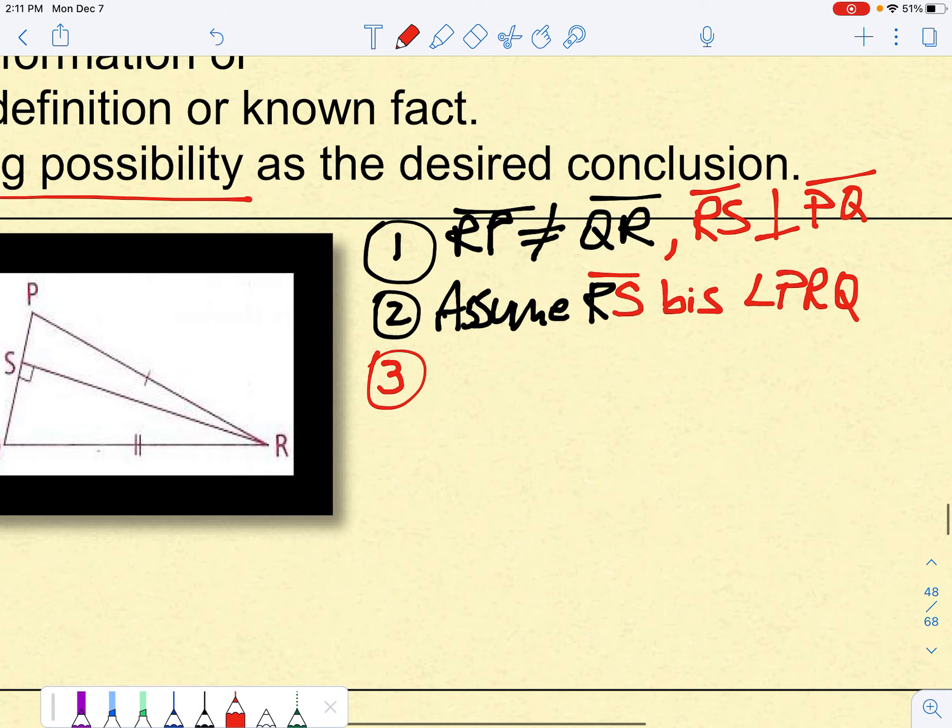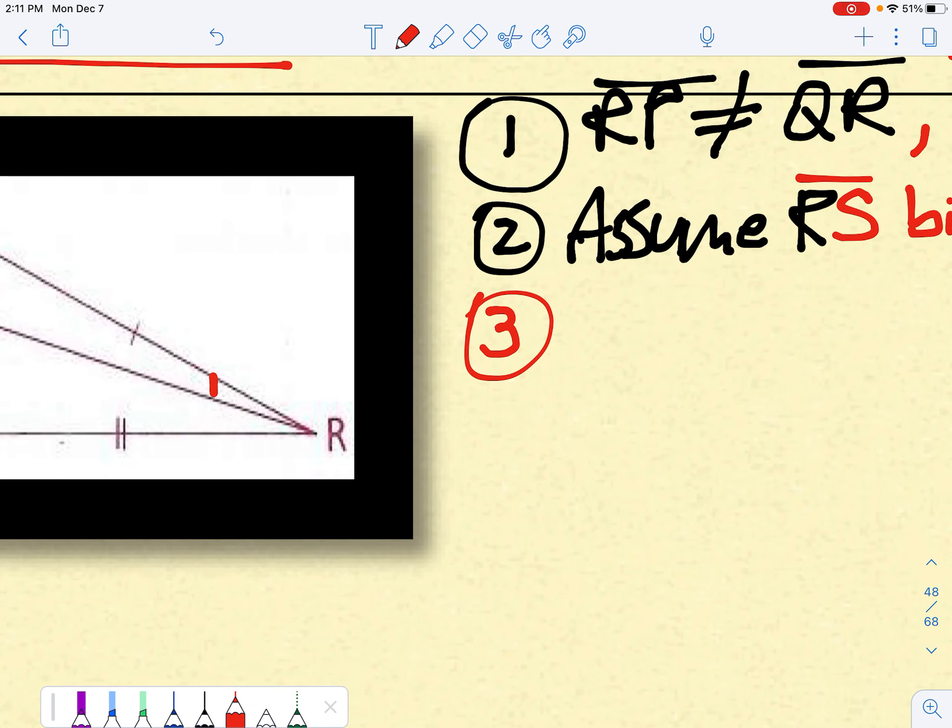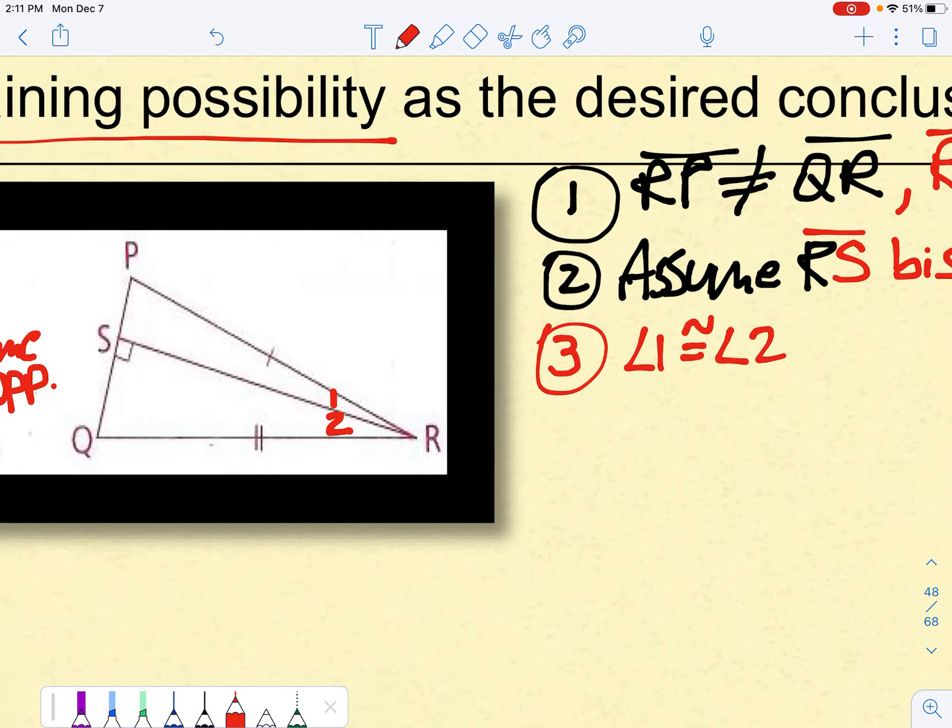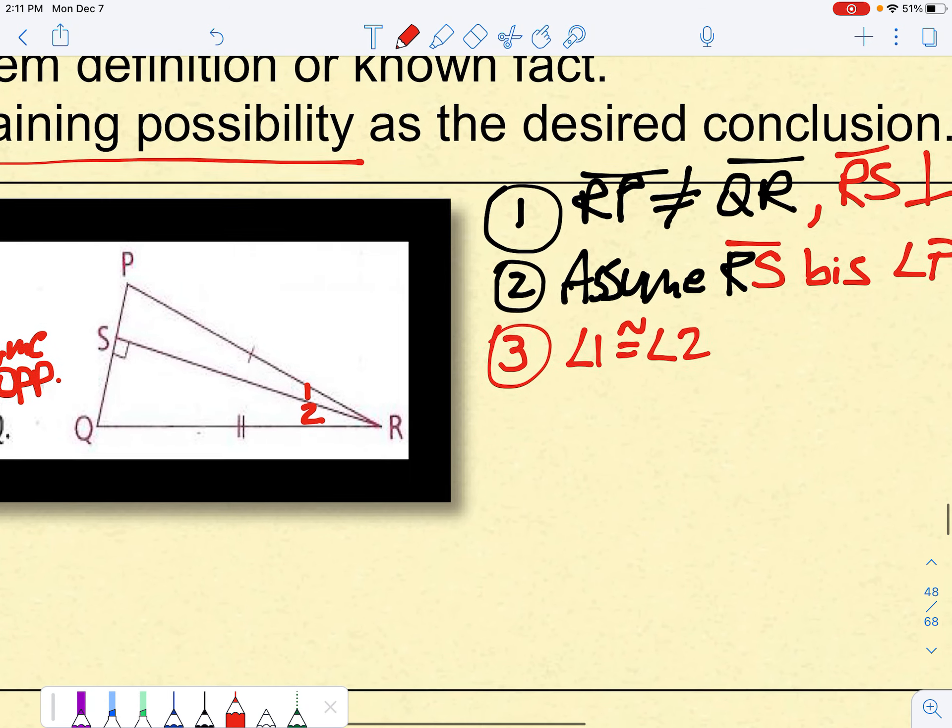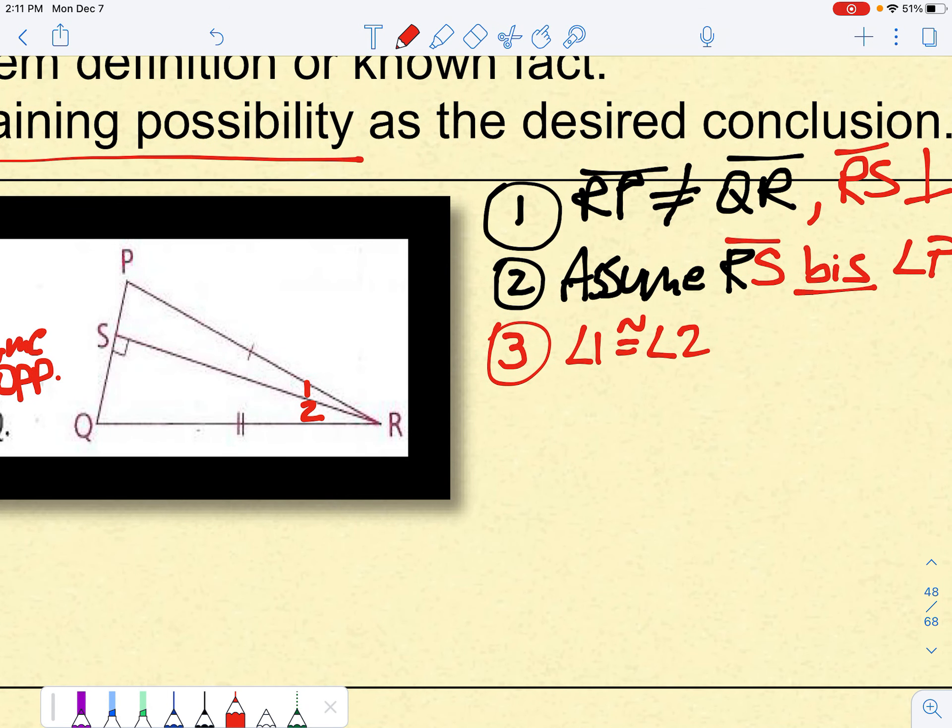Well, if RS does bisect that, we could then say these two angles here, angle one and angle two, would have to be congruent. And that's because by definition of bisector, if you have a bisector, then the angles got to be the same.